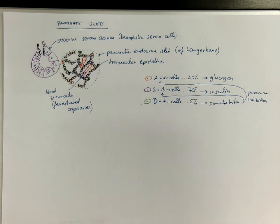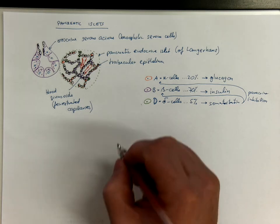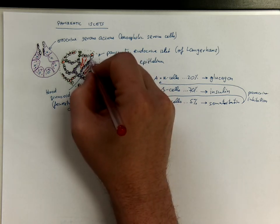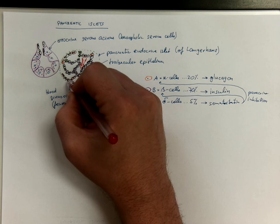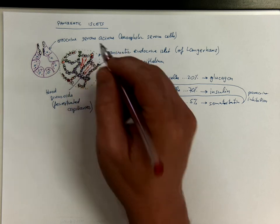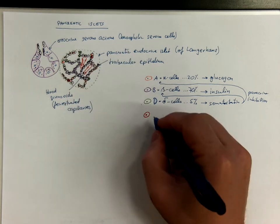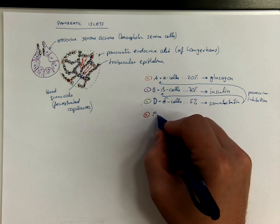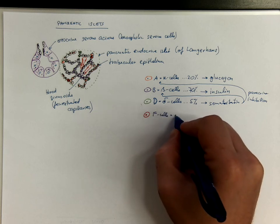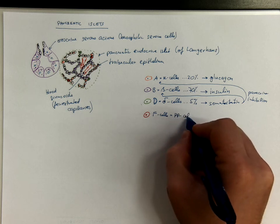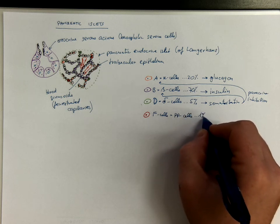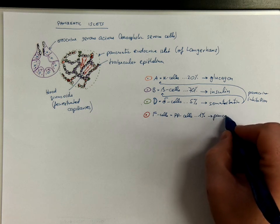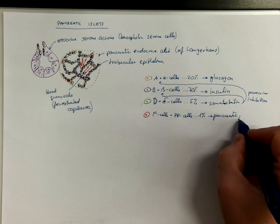And very rare are the F cells, only one percent. F cells or P cells, one percent approximately. They produce pancreatic polypeptide.